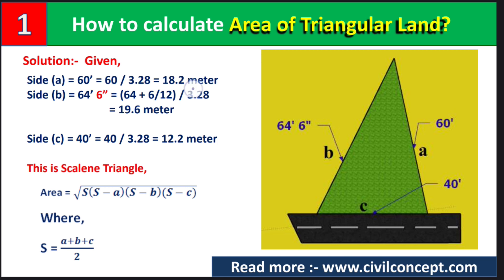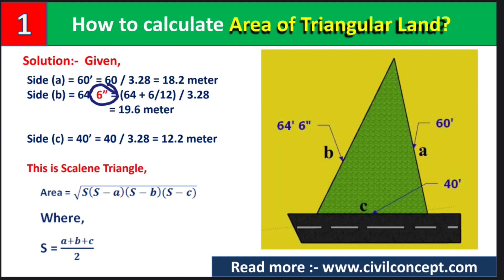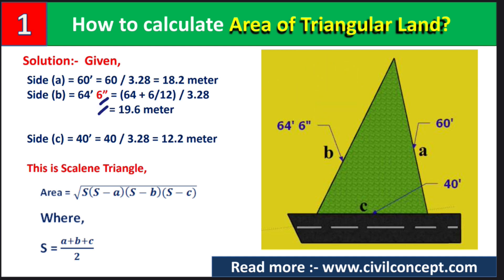Side B is 64 feet 6 inches. The 6 inches needs to be converted into the same unit, which is feet. One foot is equal to 12 inches, so when we convert the 6 inches into feet we divide by 12 and add it to 64 feet.